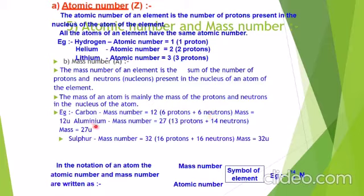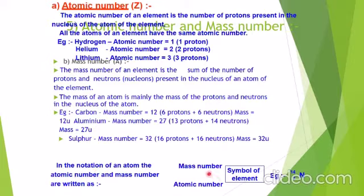Aluminium has mass number 27 — it has 13 protons and 14 neutrons, giving a mass of 27 u. Sulfur has mass number 32 — 16 protons and 16 neutrons, giving 32 u. In the notation of an atom, the symbol is written in the center, the atomic number on the lower left side, and the mass number on the upper left side. For example, nitrogen has atomic number 7 and mass number 14, and is represented accordingly.